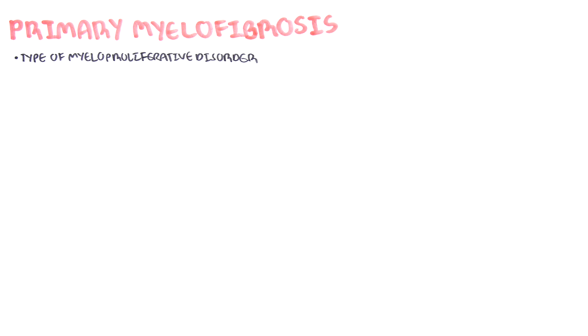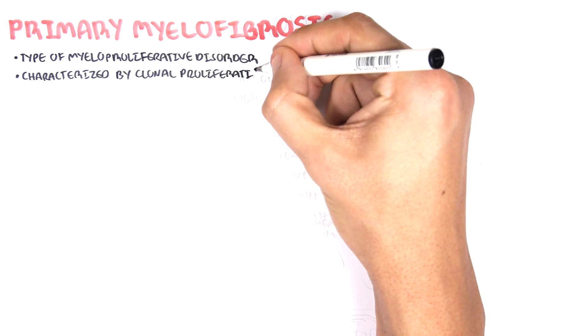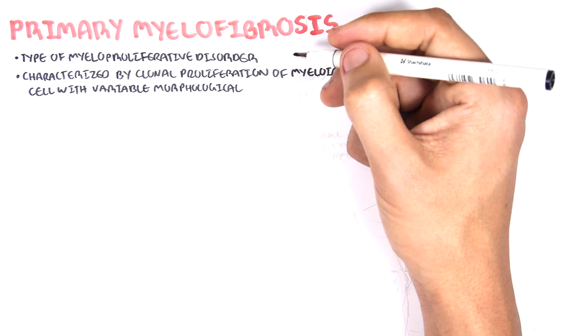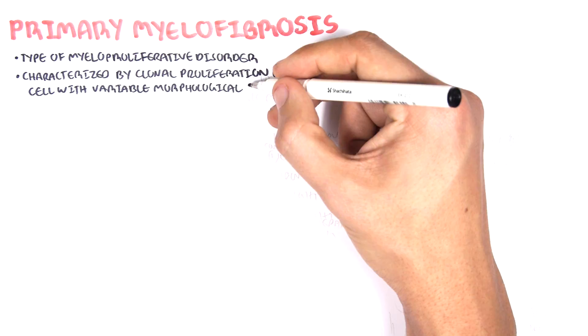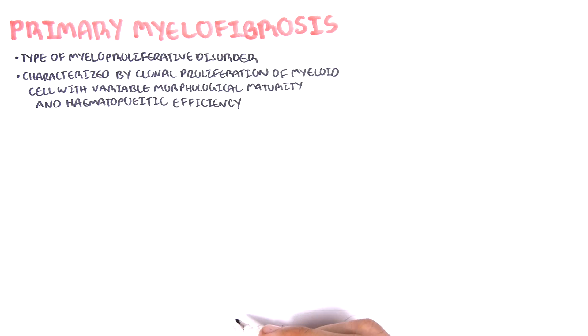With primary myelofibrosis in particular, it is characterized by clonal proliferation of myeloid cells with variable morphological maturity and hematopoietic efficiency.